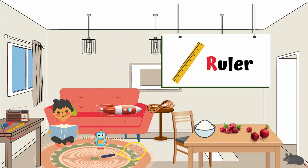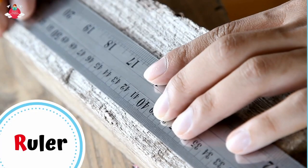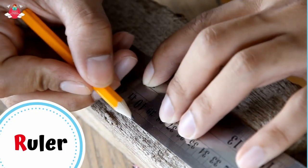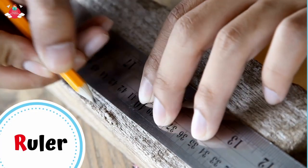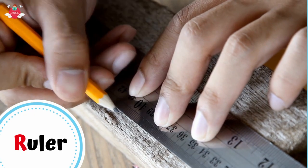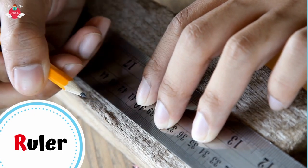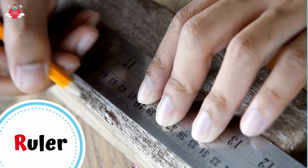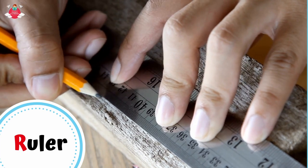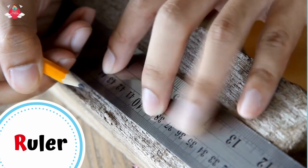Anything else that starts with letter R in Ryan's house? Can you see the ruler on the table? Ruler. A ruler is a long, narrow, flat piece of plastic, metal, or wood with straight edges where centimeters or inches, or both, are printed. It is used for measuring things and for drawing straight lines.